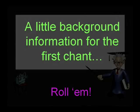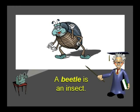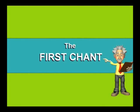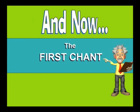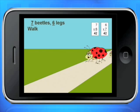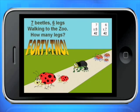Here's a little background information for the first Chant. A Beetle is an Insect. A Beetle is an Insect. All Insects have 6 legs. And now, the first Chant: Seven Beetles, 6 legs, walking to the zoo. How many legs? 42.